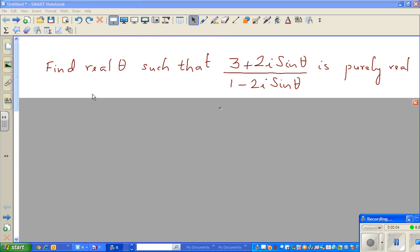In this video, I'm going to show you an example where we have to find all real theta such that (3 + 2i·sin(θ))/(1 - 2i·sin(θ)) is purely real. What they're saying is this is purely real—there is no imaginary part.